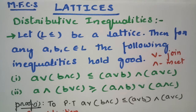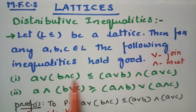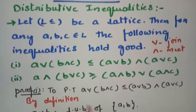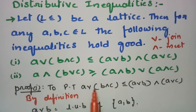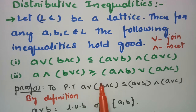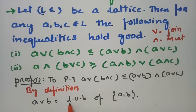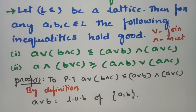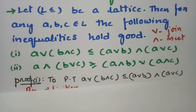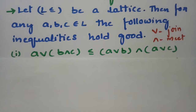These are the two inequalities that need to be proved. For proof number one, we need to show that (a ∨ b) ∧ c ≤ (a ∨ b) ∧ (a ∨ c). By definition, a ∨ b is the least upper bound of the set {a, b}.